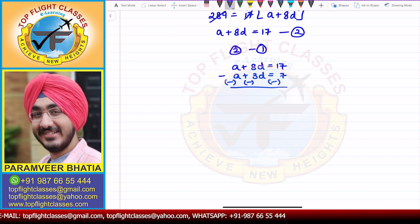So when I subtract the signs will change. From here I get a minus a, that is 0. Then 8d minus 3d, I get 5d equals 17 minus 7 which will be 10. So d value here I get 10 by 5 which equals 2.